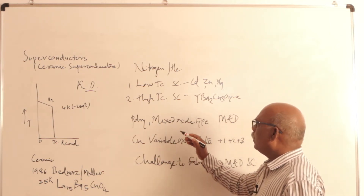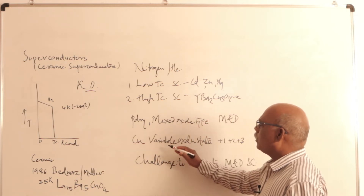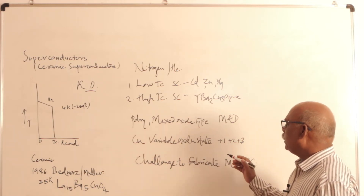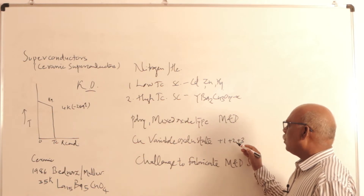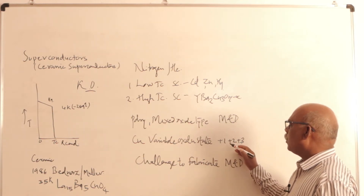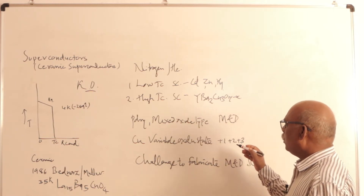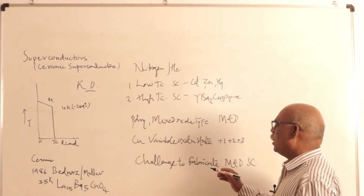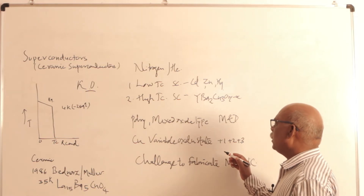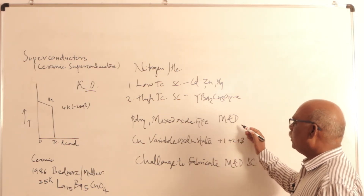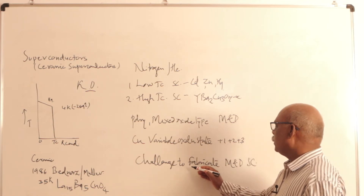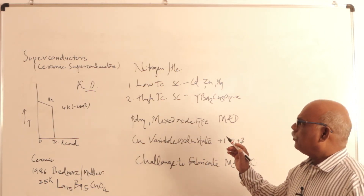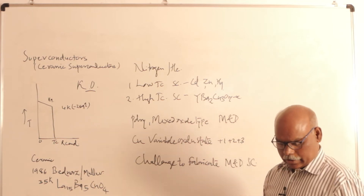In YBa2Cu3O7-x, copper shows a variable oxidation state — it may show +1, +2, or +3 oxidation state. This variable oxidation state is mainly the reason behind the superconducting activity. To fabricate a superconducting material that is malleable and ductile is a great challenge before scientists. That is about superconductors and their categories in brief.